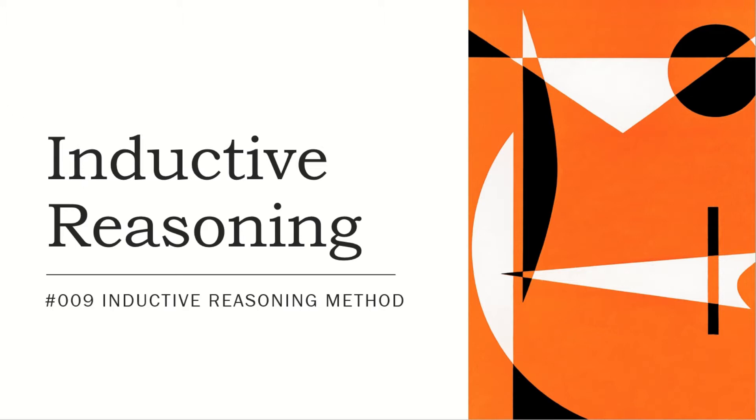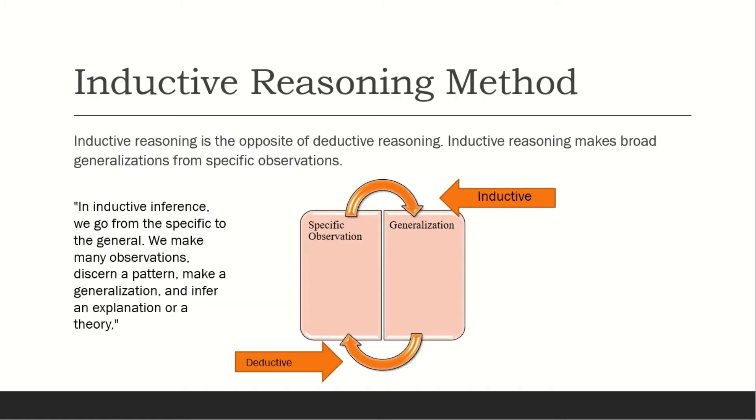Here is the inductive reasoning method. It's the opposite of deductive reasoning. Inductive reasoning makes broad generalizations from specific observations. Deductive reasoning goes from generalized concepts to specific observations and logical conclusions. However, inductive is vice versa - from specific observations to generalizations.